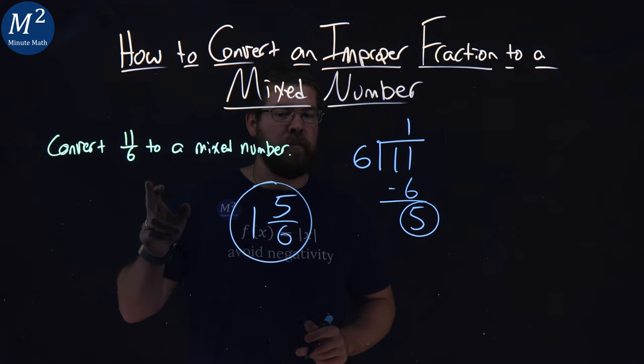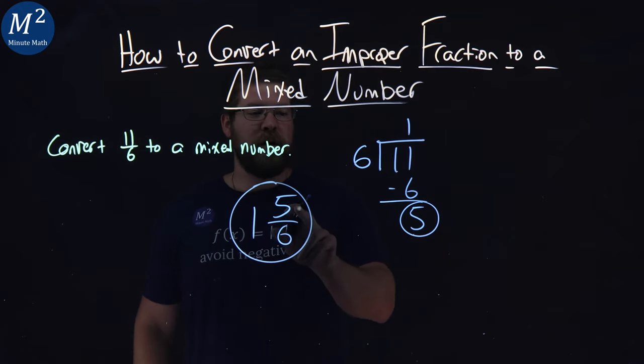11 over 6 as a mixed number is 1 and 5 sixths.